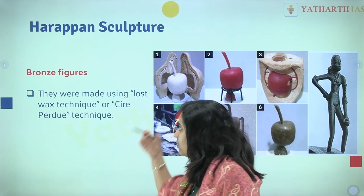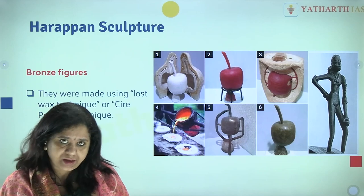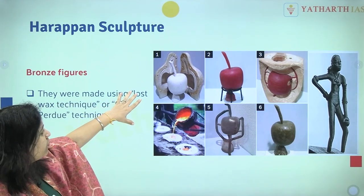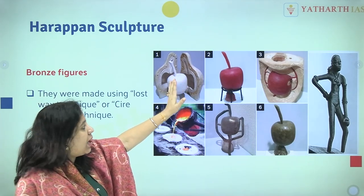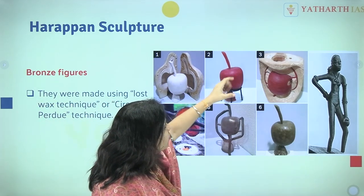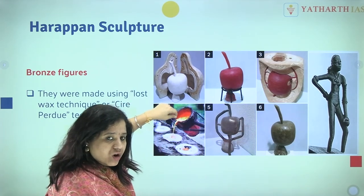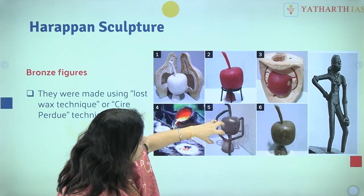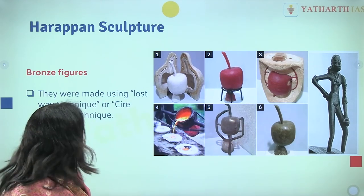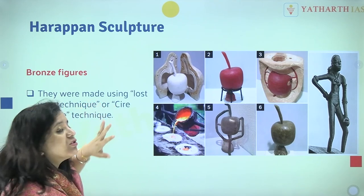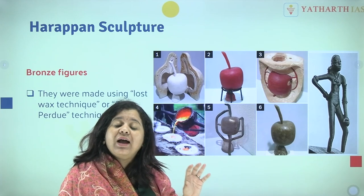Bronze figurines were made using the lost wax technique — they used to make a dummy mould, insert metal in fluid form, and mould it into the desired figure or sculpture. The lost wax technique was used in making sculptures of the Indus Valley civilization.